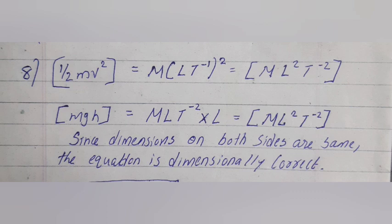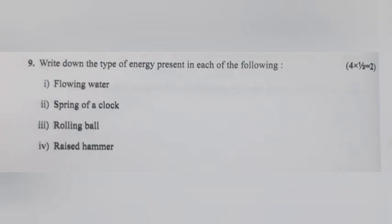Question 9: Write down the type of energy present in each of the following: 1) Flowing water - Answer: Kinetic energy. 2) Spring of a clock - Answer: Potential energy. 3) Rolling ball - Answer: Kinetic energy. 4) Raised hammer - Answer: Potential energy.